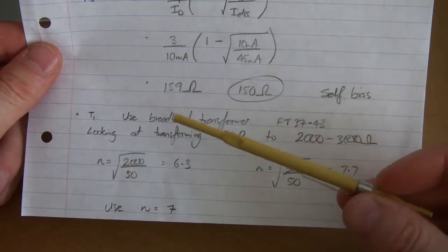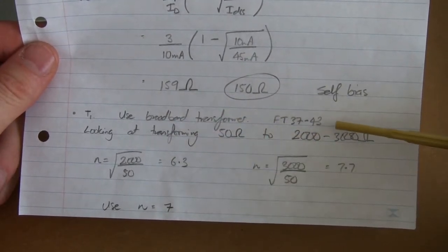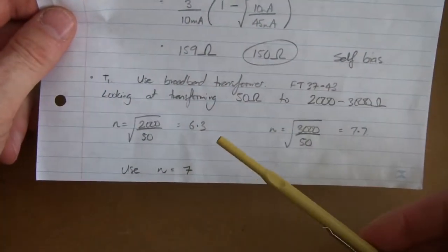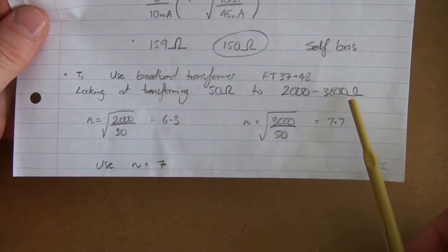but it certainly helped with that high frequency gain. So T1, just using a broadband transformer, so it's an FT37-43, and as we said,